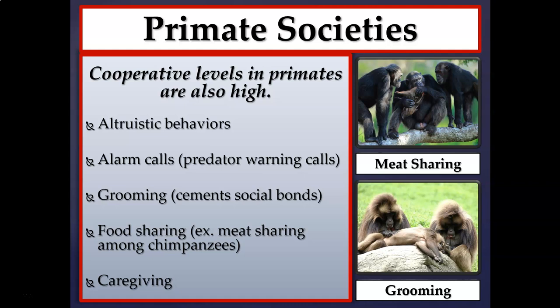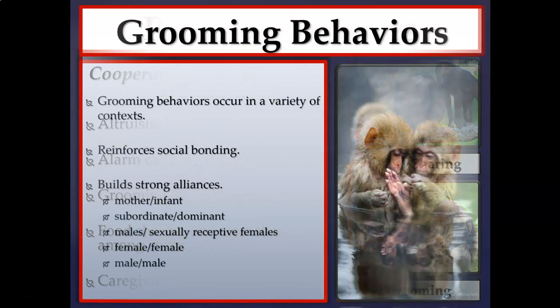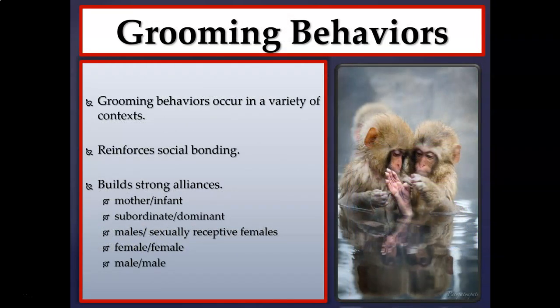Caregiving is commonly seen in female primates and even adolescent females — they not only care for their own young but also help care for the young of those they form alliances with. Grooming occurs in a wide variety of contexts: it reinforces social bonding and makes alliances much stronger, and is seen between mothers and infants, between subordinates and dominants, between males and reproductively active females, and between same-sex individuals.